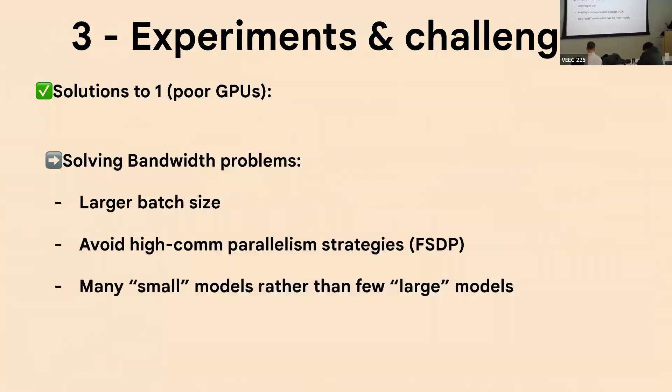And a few solutions are, for example, using a larger batch size. You can't go too big because then it's going to impact the performance, but you can at least max out a bit, avoiding high communication parallelism strategies. And then if the project allows training many small models rather than a few very big models, I think for Ulmo, this wasn't really possible, but at least for scaling data-constrained language models, we could just rely on many small models instead.